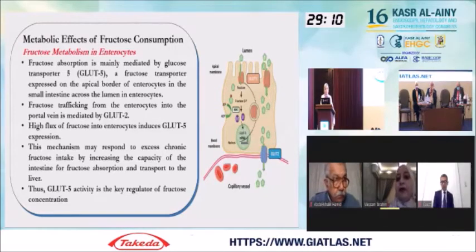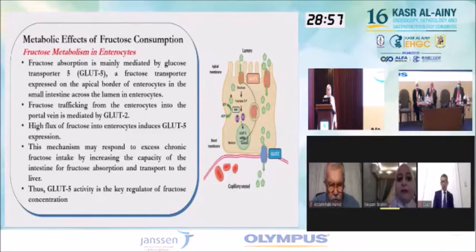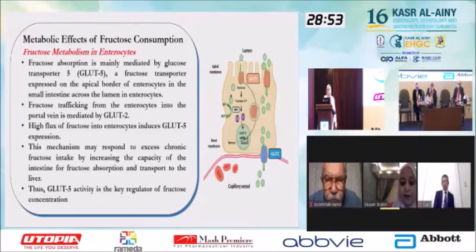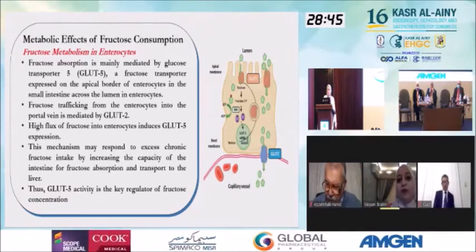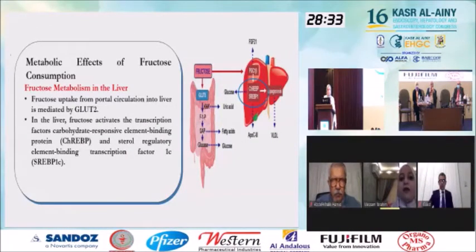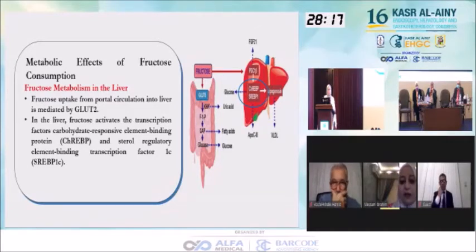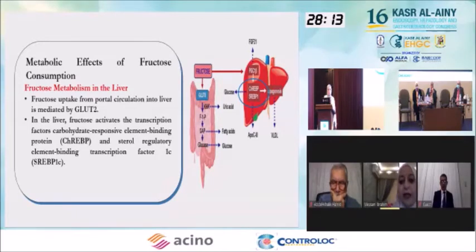Fructose is then transported and taken up by hepatocytes via GLUT2, where it activates very important transcription factors: the carbohydrate-responsive element-binding protein (ChREBP) and sterol regulatory element-binding transcription factor 1C (SREBP-1c). This increases fructolysis. Fructokinase converts fructose to fructose-1-phosphate, then aldolase B acts on it, giving two very important products: dihydroxyacetone phosphate (DHAP) and glyceraldehyde. DHAP undergoes a long pathway to yield acetyl-CoA, which enters lipogenic pathways. Glyceraldehyde is converted to glycerol-3-phosphate. Both together with fatty acids undergo esterification, yielding large amounts of triglycerides — the hallmark problem: triglyceride accumulation in the liver.